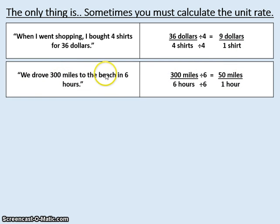We drove 300 miles to the beach in six hours. You've made a rate comparison, 300 miles every six hours. Reduce that by six and you have a unit rate, 50 miles per one hour. Here is your unit rate because it's being compared to one.